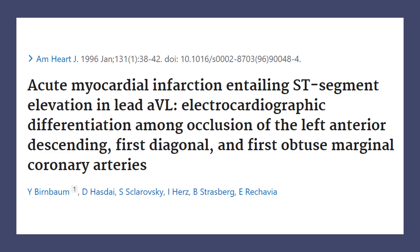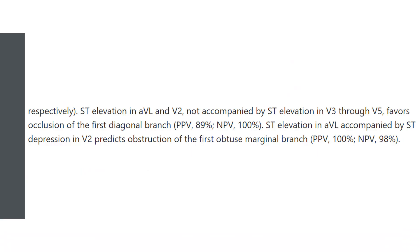Going back to 1996, the American Heart Journal published a study on acute MI with ST elevation in AVL. The conclusion was: ST elevation in AVL and V2, not accompanied by ST elevation in V3 to V5, favored first diagonal branch occlusion with a negative predictive value of 100%. They also noted that ST elevation in AVL alone, accompanied by ST depression in V2, predicts obstruction of the first obtuse marginal branch.